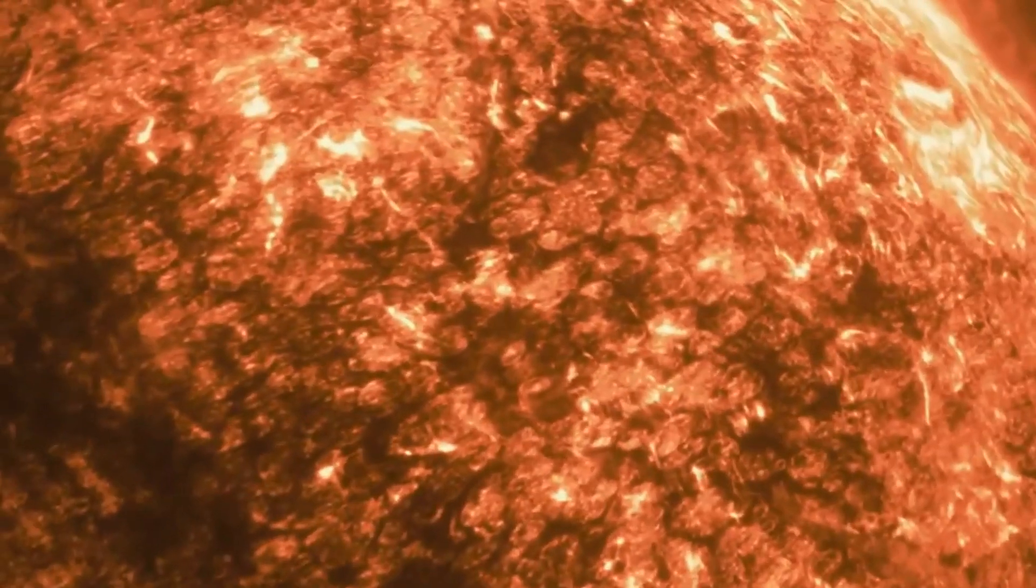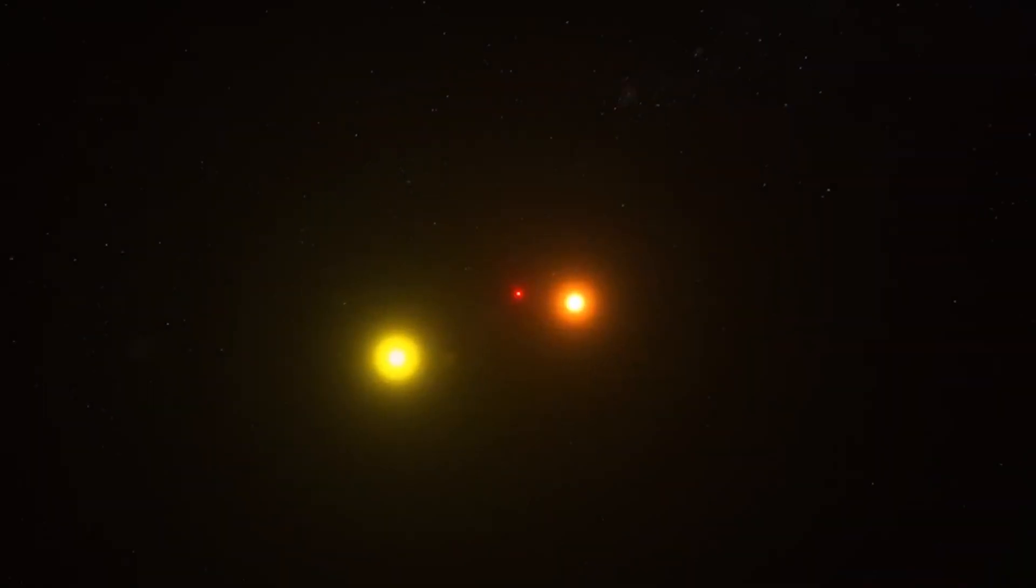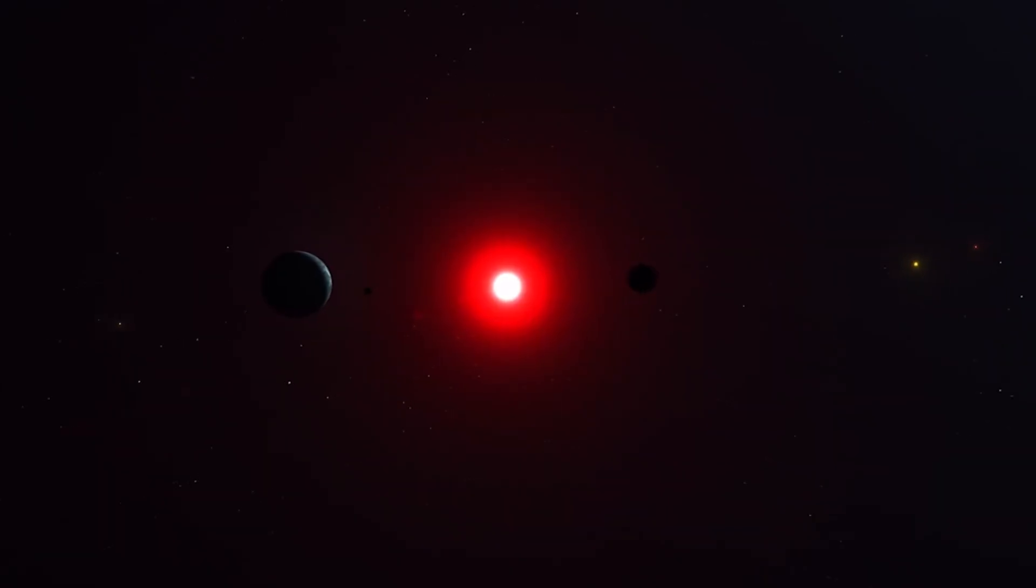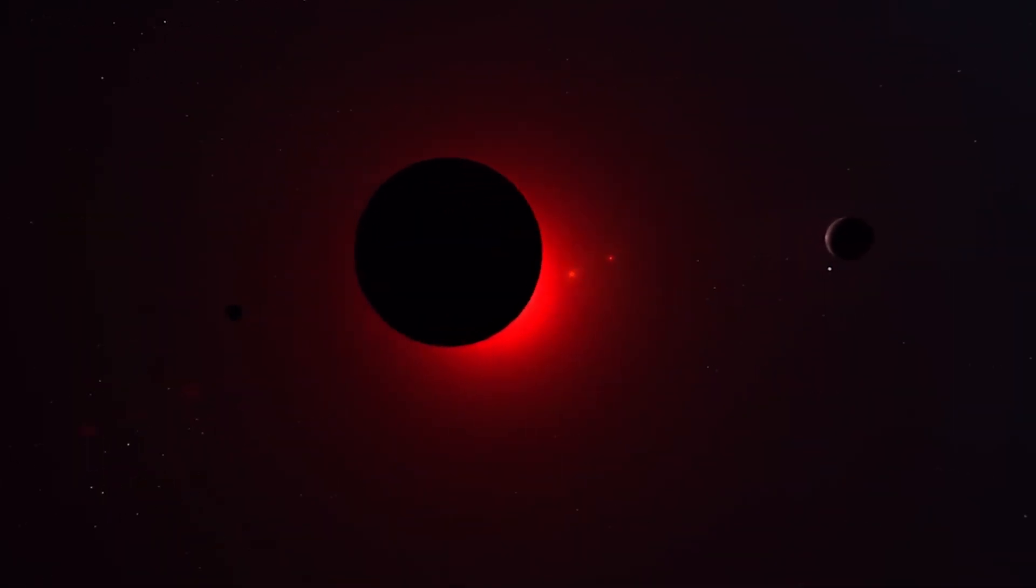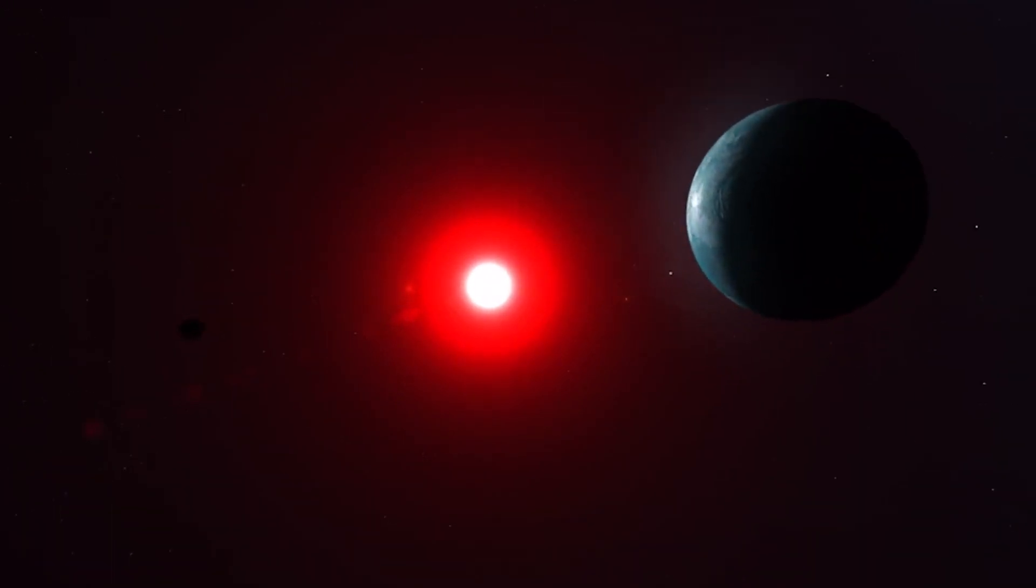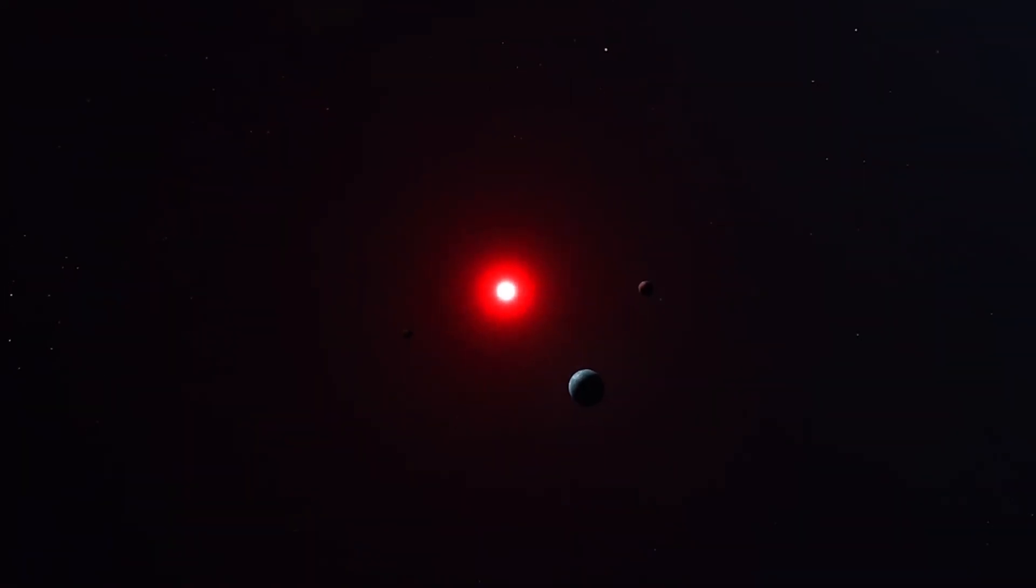Proxima Centauri is a red dwarf star that is just 4.2 light years from Earth and could have habitable or even super habitable planets. Proxima Centauri b is one such planet that is located in the habitable zone of this dwarf star. Although Proxima Centauri b has the potential to support life, it faces great difficulties due to tidal locking events and stellar activity.